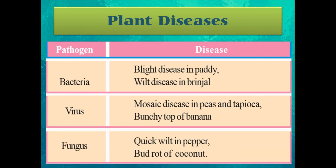Moving to the next topic — plant diseases. Bacteria cause blight disease in paddy and wilt disease in brinjal. Viruses cause mosaic disease in peas and tapioca, and bunchy top disease in banana. Fungi cause quick wilt in pepper plants and bud rot in coconut. So different pathogens can cause diseases in plants and animals, as well as in humans.